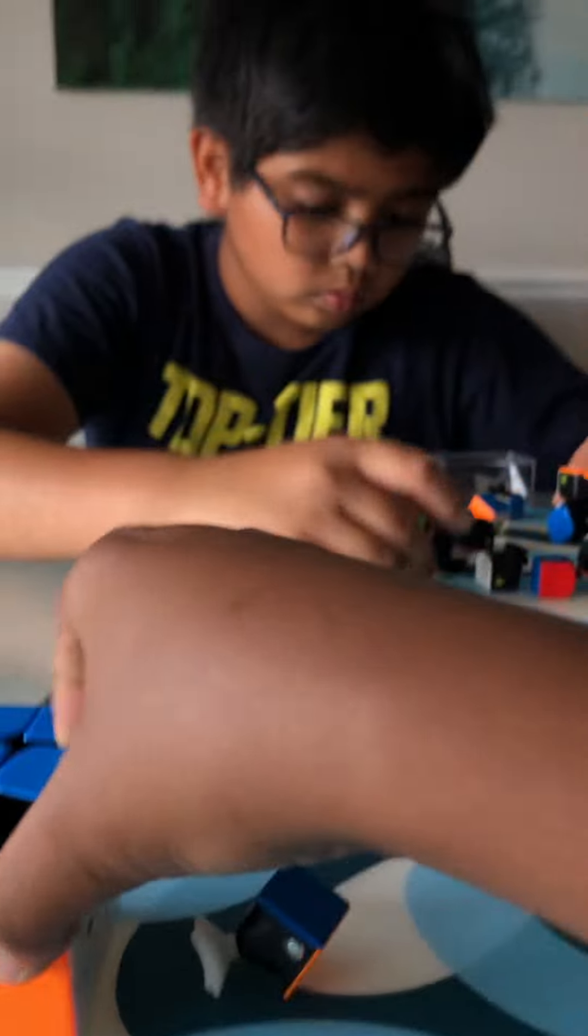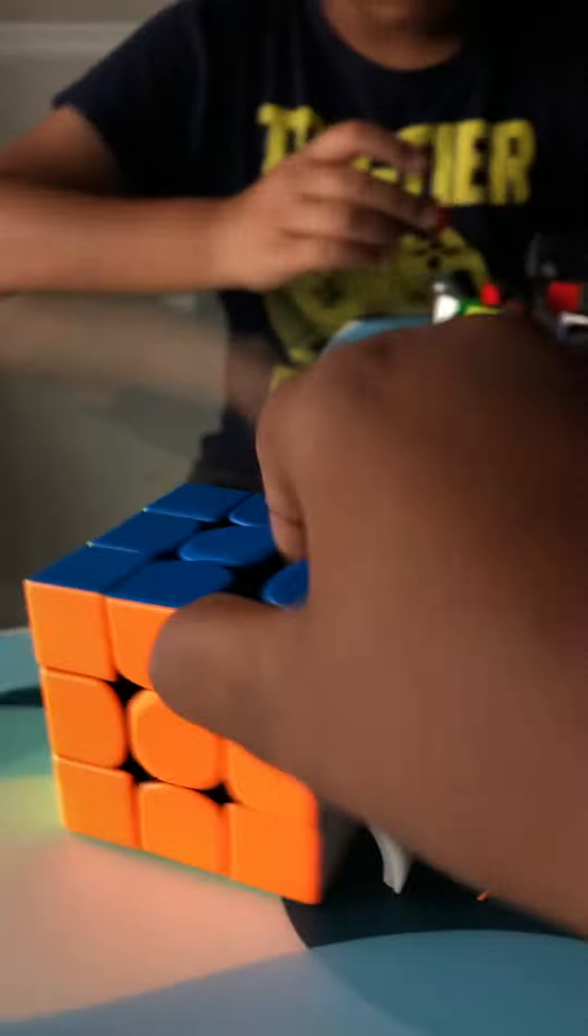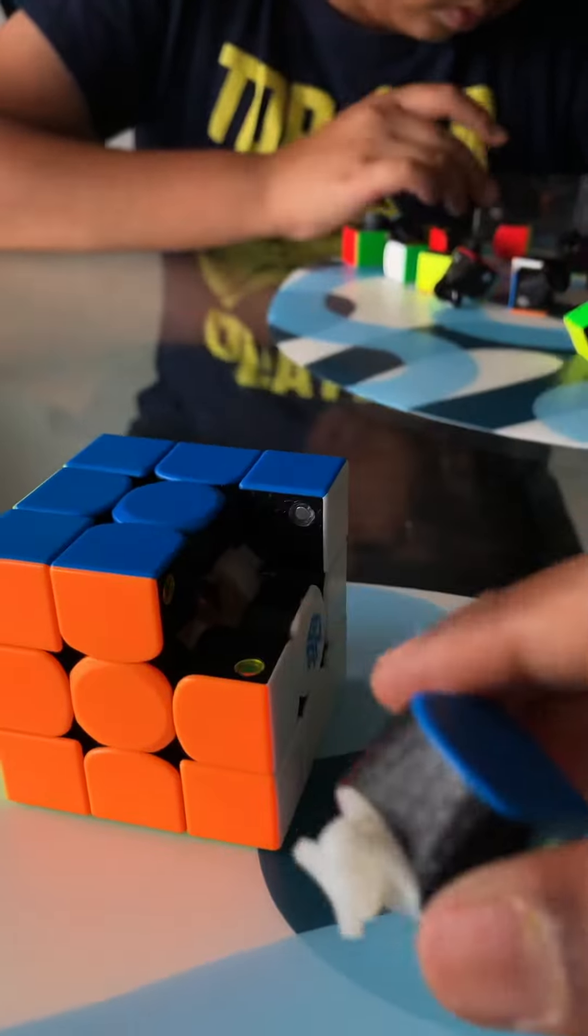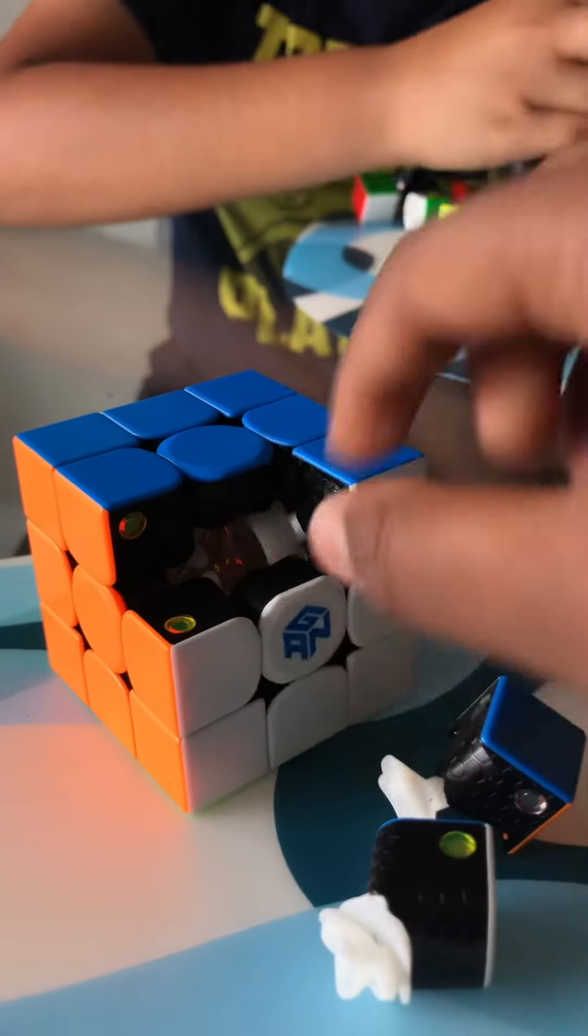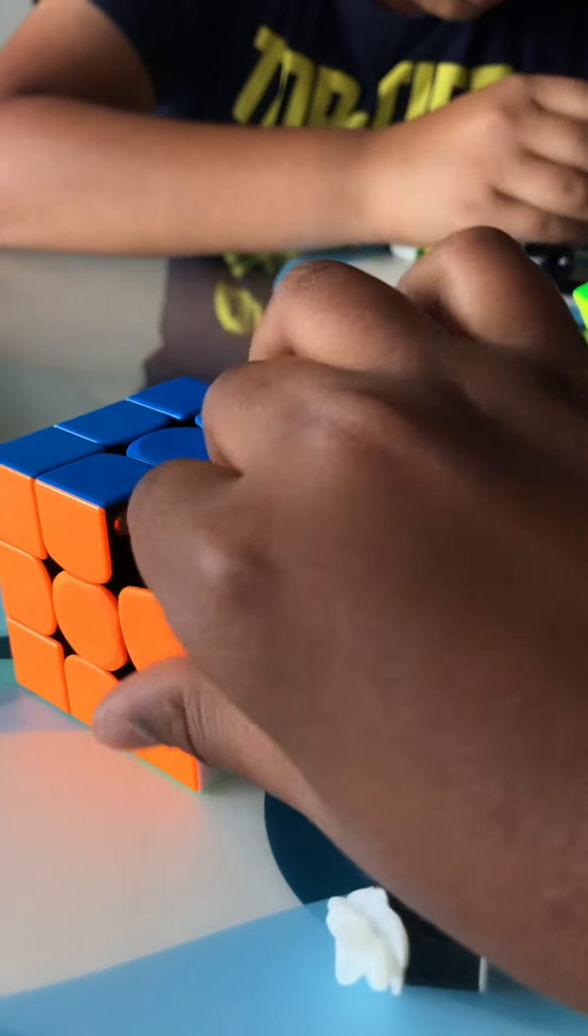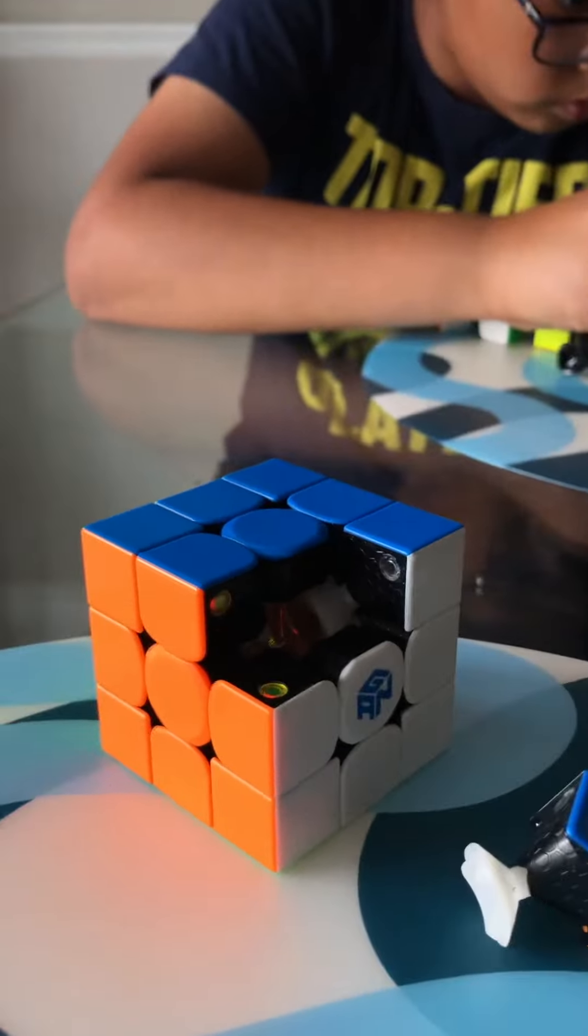After that, you can pull out the other pieces really easily just by pulling them like this. See? And then you do the first layer and then you can eventually take out these ones and then your whole cube falls apart.